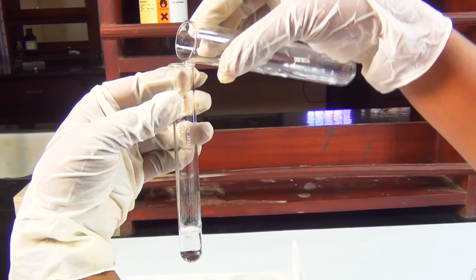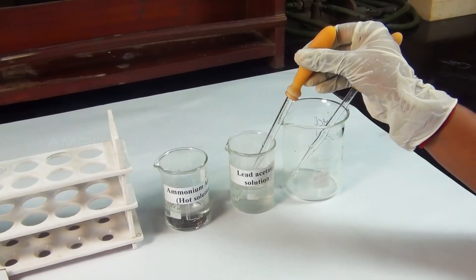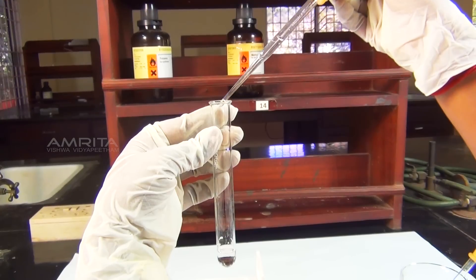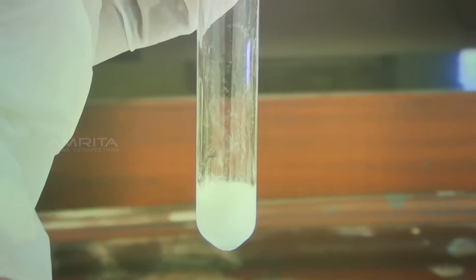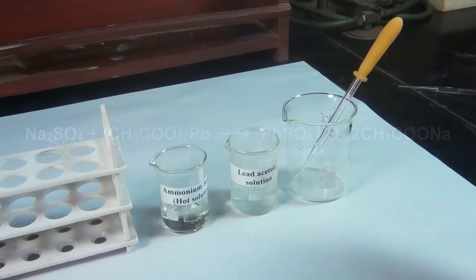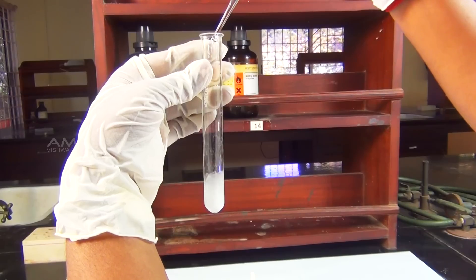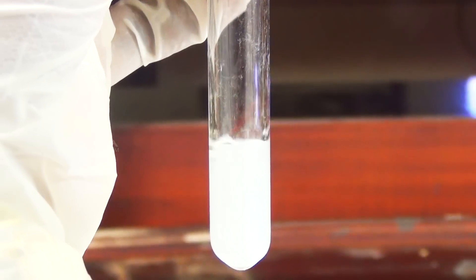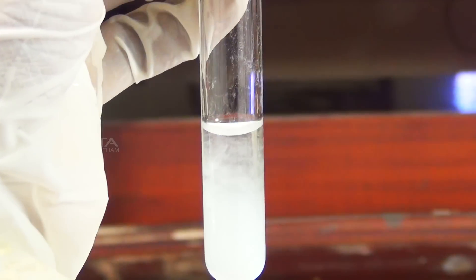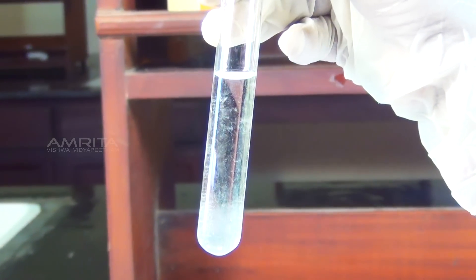Procedure: Take a small portion of aqueous solution of the salt in the test tube. To this, add lead acetate solution using a dropper. Sulphate reacts with lead acetate to form a white precipitate of lead sulphate. Using another dropper, add excess of hot ammonium acetate solution to the lead sulphate precipitate. The precipitate is soluble in excess of hot ammonium acetate.